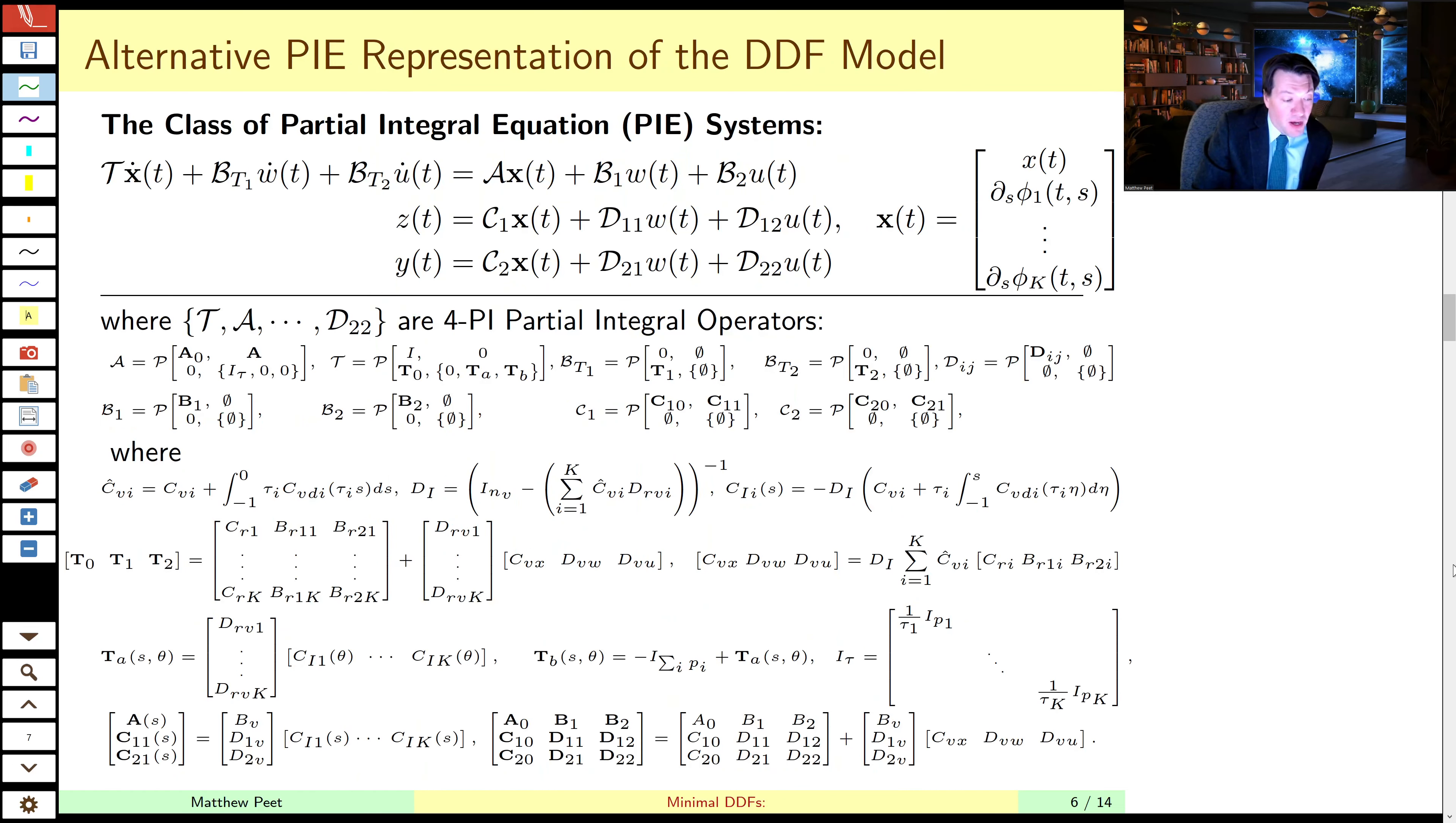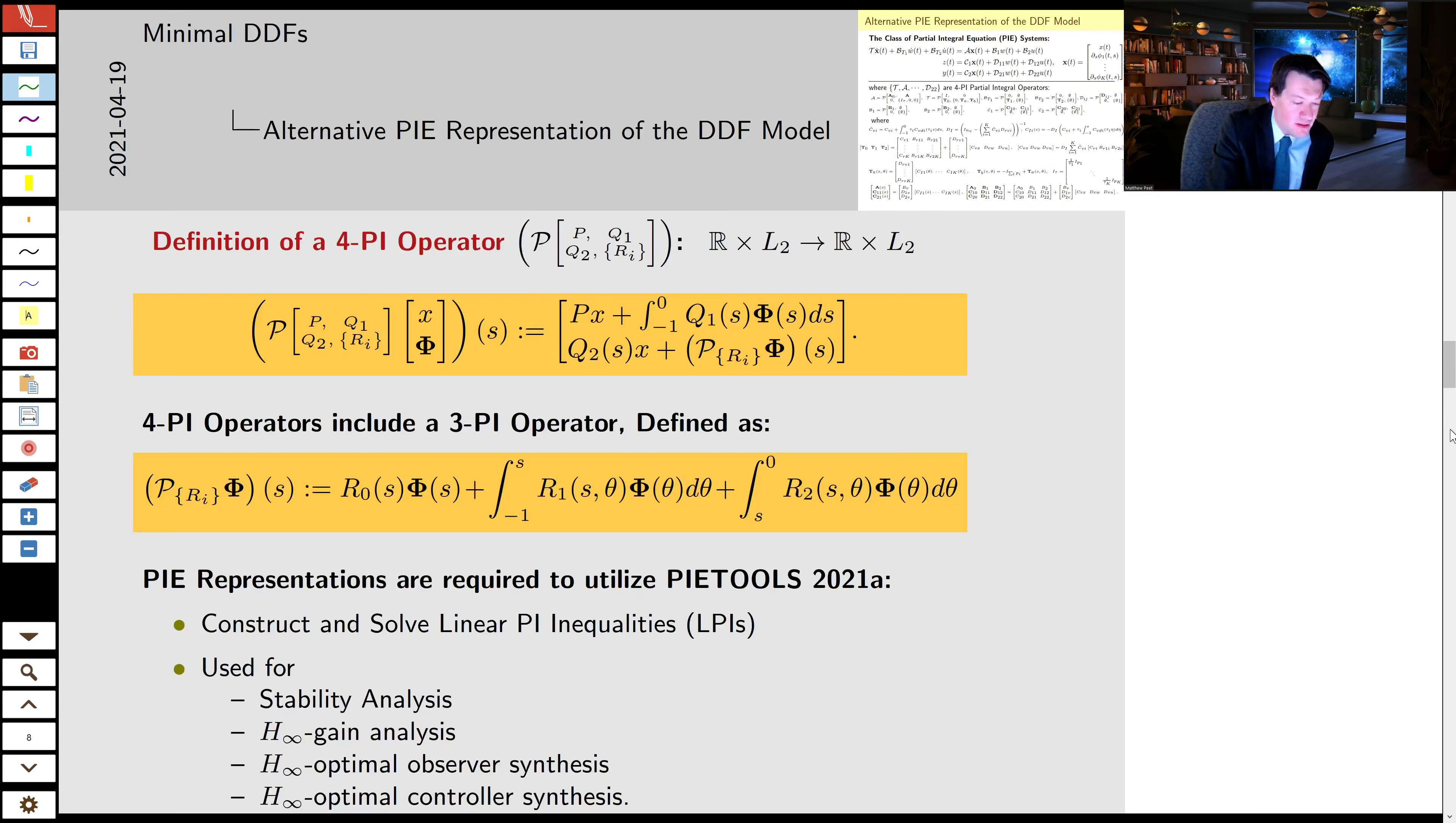So this can be used within the backstepping framework or whatever simulation tool you use for simulating PDEs. Likewise, the conversion to a PIE, if you're into PIEs, is likewise straightforward. Although in this case, the state of the system is slightly different. It's not the PDE state, it's the partial derivative of the PDE state. But again, there are tools for analysis and control of PIEs, which we won't focus on.